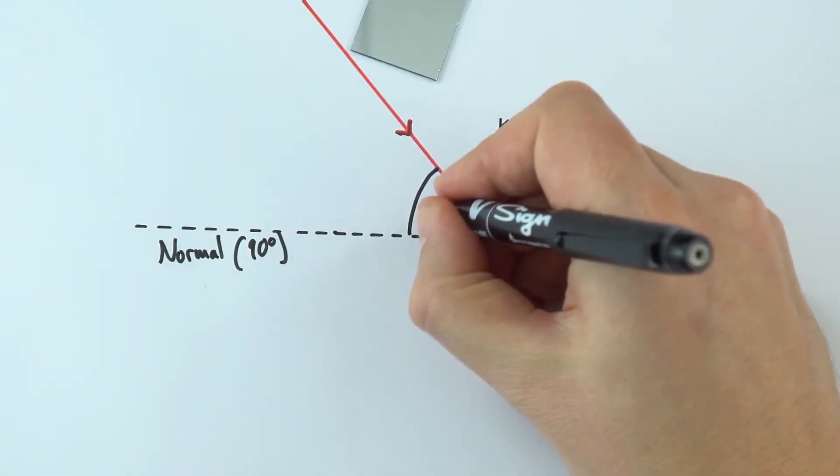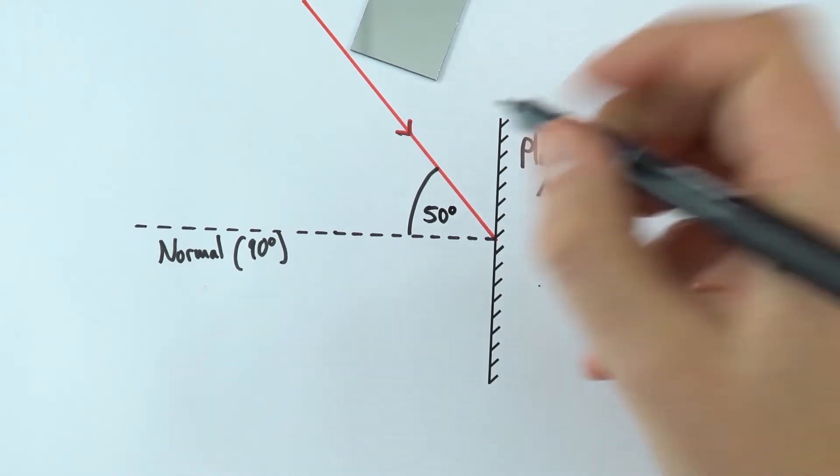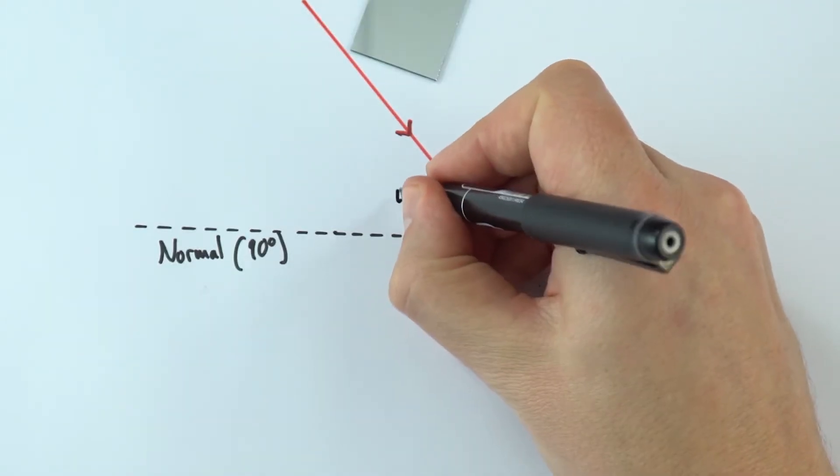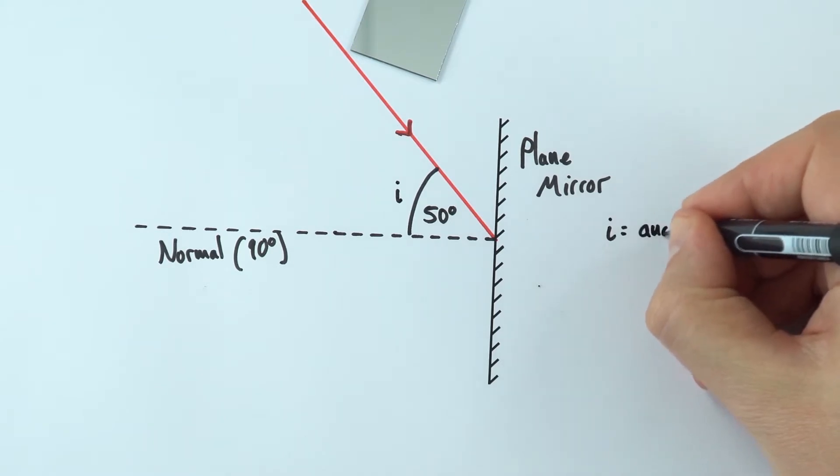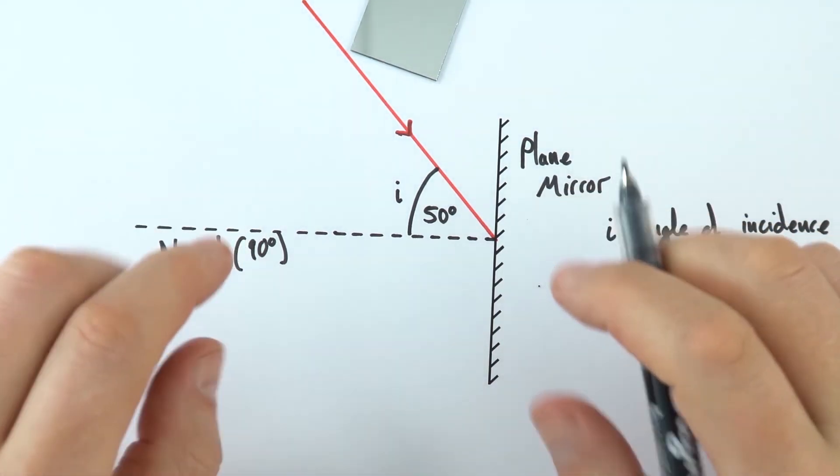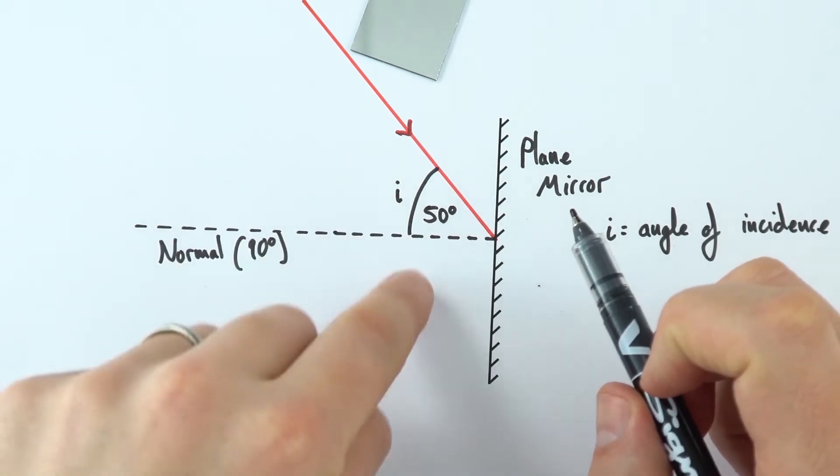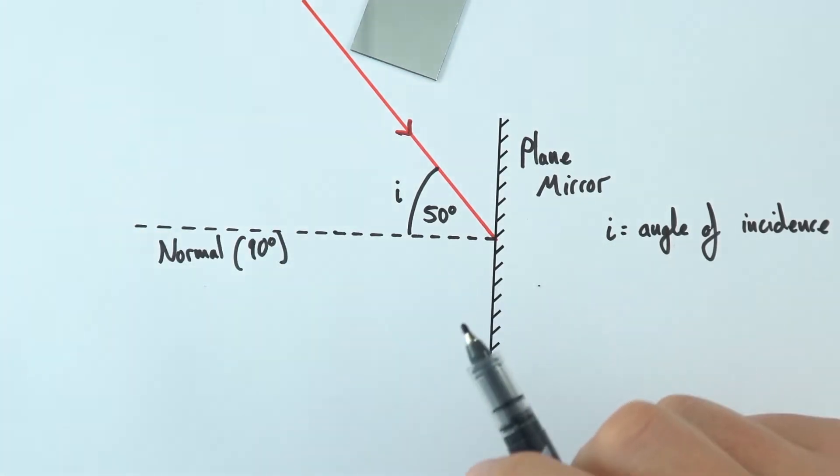Okay, so this angle here is equal to 50 degrees, and I'm going to label that as little i. Little i is our angle of incidence, and what we find is that when you have reflection, the angle of incidence is equal to the angle of reflection.